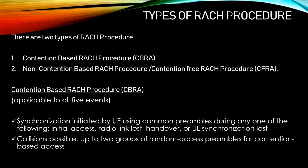There are two types of RACH procedures. The first one is contention-based RACH procedure, in short we call it CBRA. The second one is non-contention-based RACH procedure, or contention-free RACH procedure - CFRA. Contention-based RACH procedure is applicable for all five events - for synchronization initiated by the UE using the common preamble during initial access, radio link failure, handover, or uplink synchronization. Collisions are possible for contention-based access.